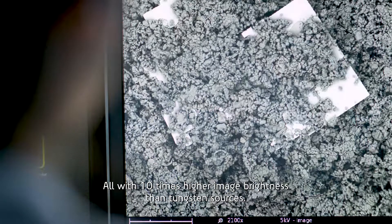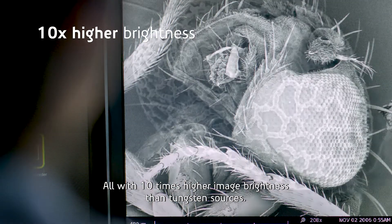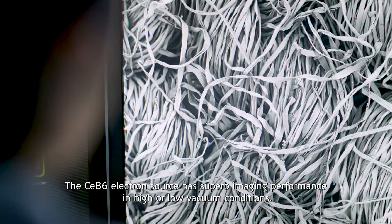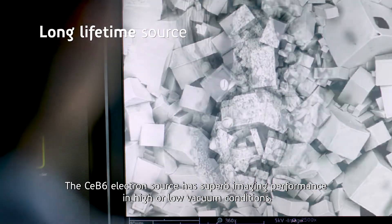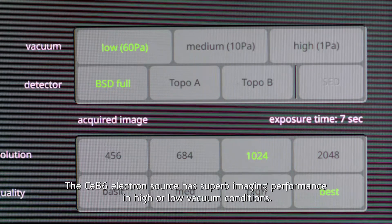All with ten times higher image brightness than tungsten sources. The CE B6 electron source has superb imaging performance in high or low vacuum conditions.